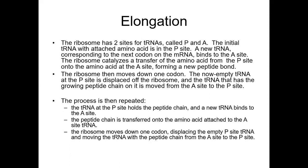The ribosome catalyzes a transfer from the P site, forming a new peptide bond. The now completely empty transfer RNA at the P site is displaced from the ribosome, and the transfer RNA that has the growing peptide chain on it is moved from the A site to the P site.